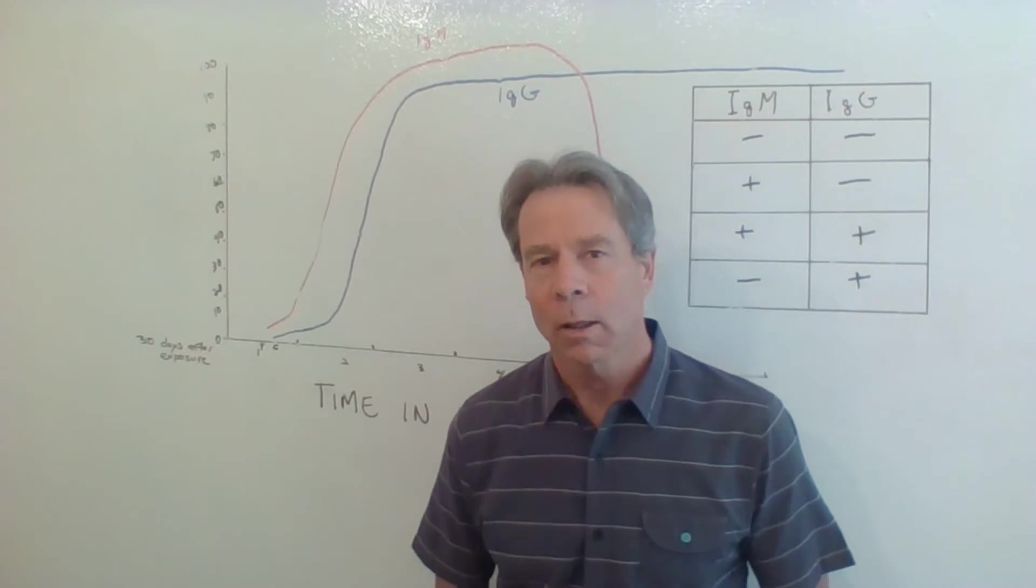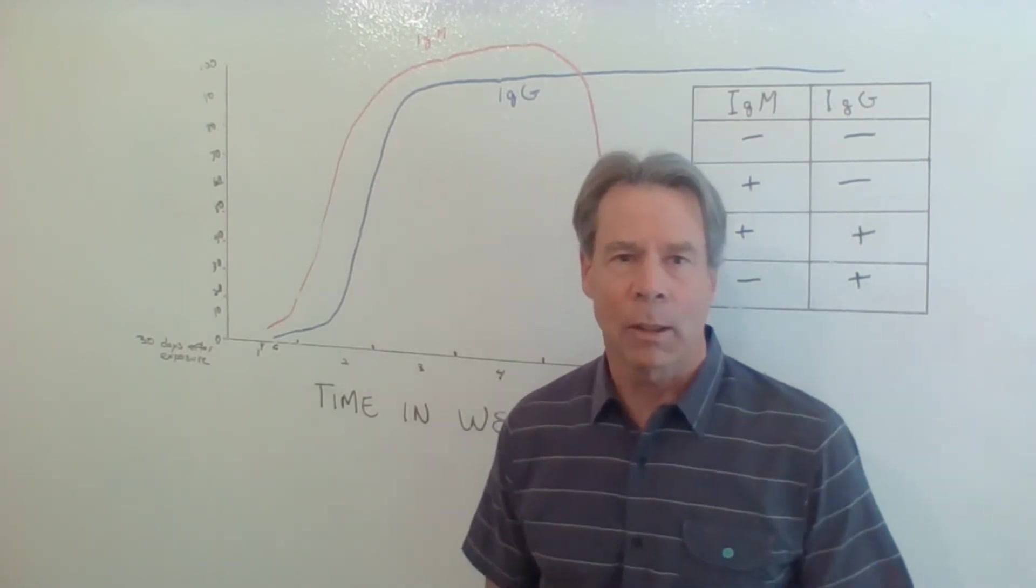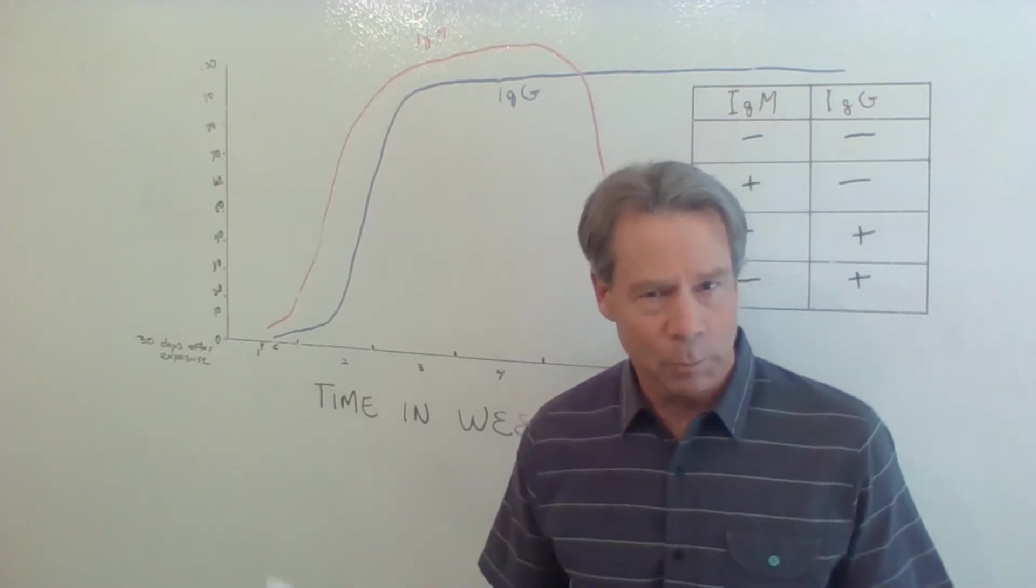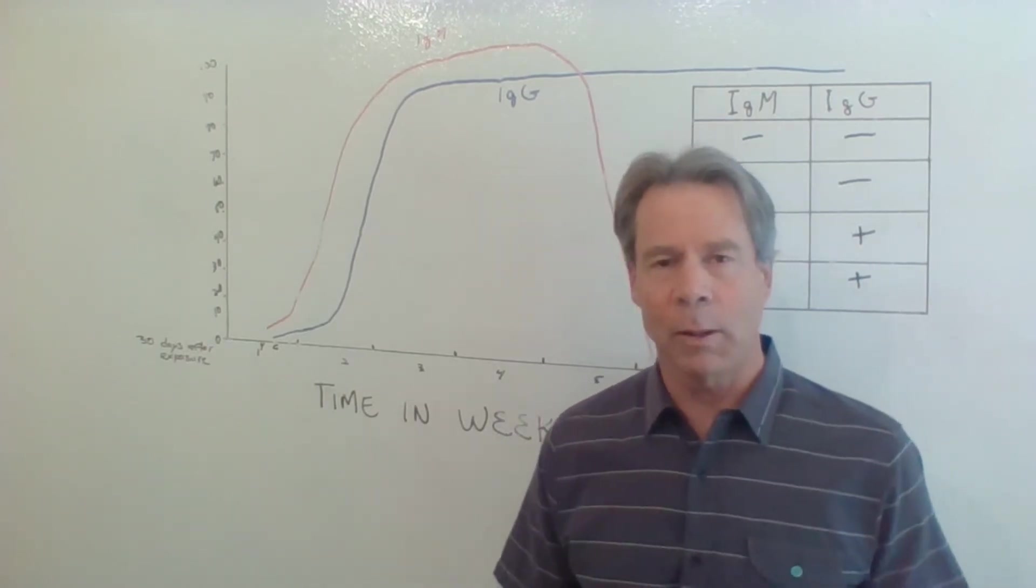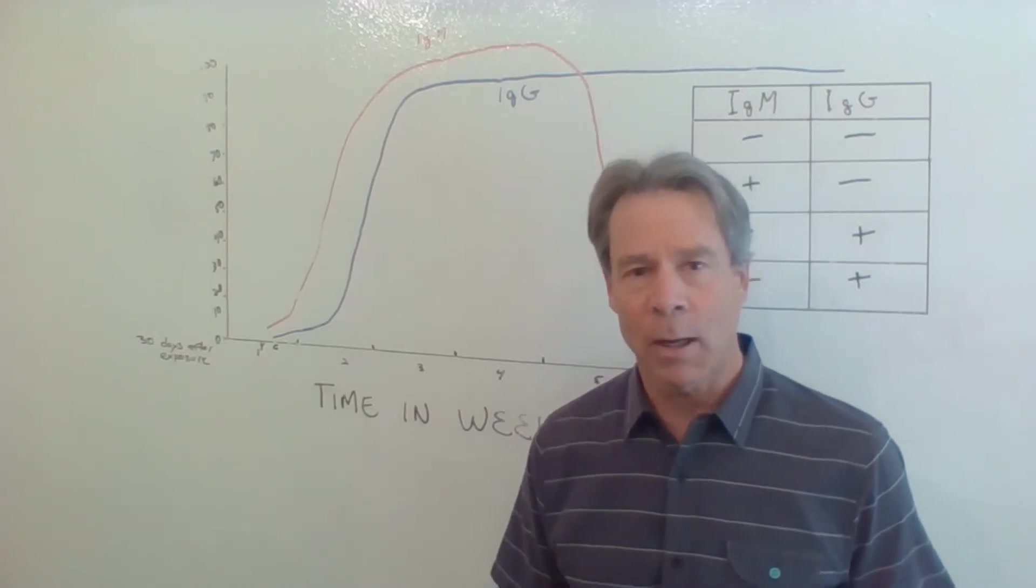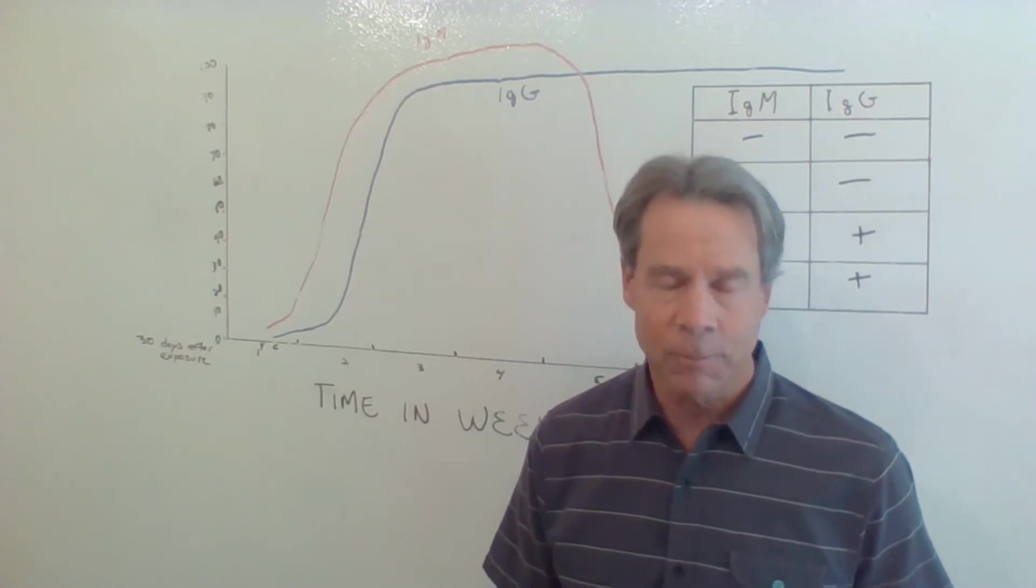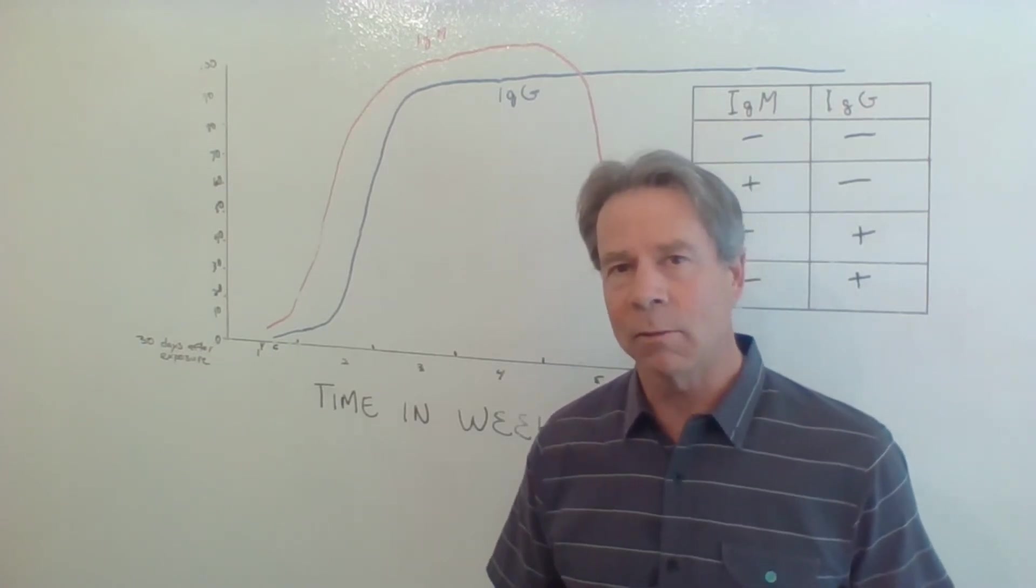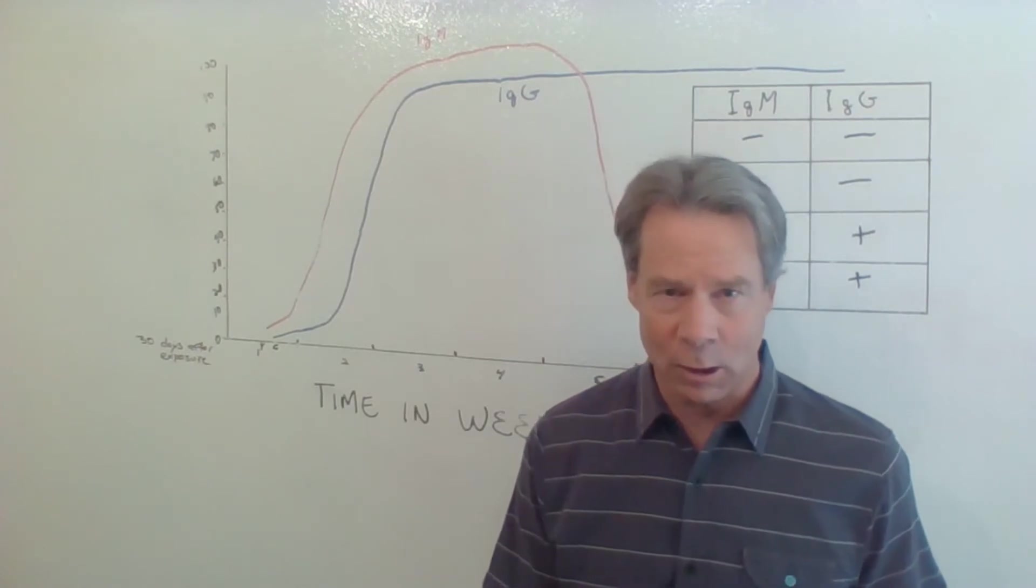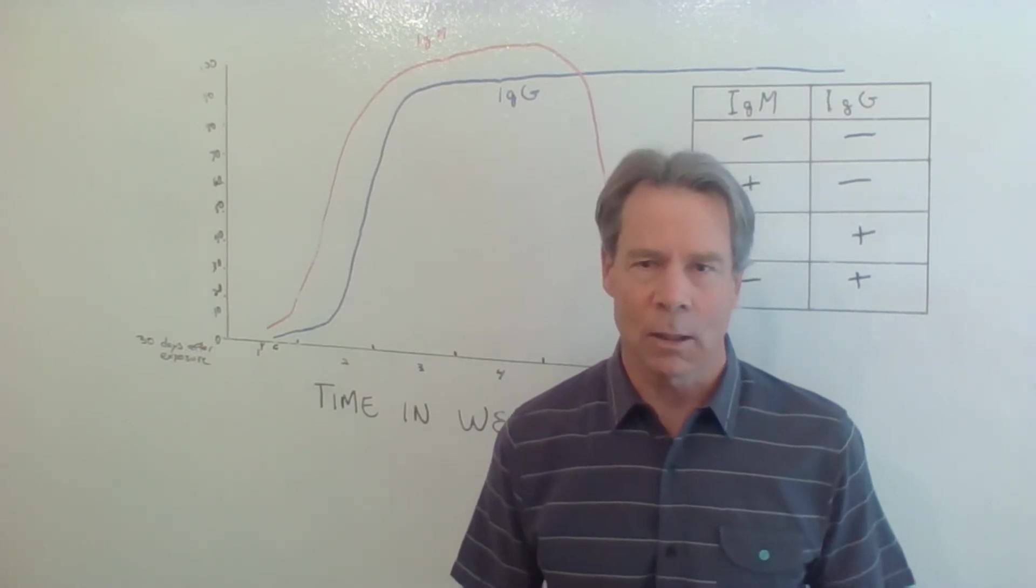So there's four possible case scenarios. We look at IgM and IgG as these molecules and I'll explain these as we go, but there's going to be a double negative, an IgM negative and an IgG negative. There's going to be a positive IgM or negative IgG. There's going to be a positive IgM and IgG, and there's going to be a negative IgM and a positive IgG.